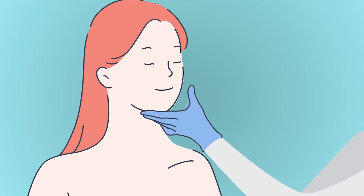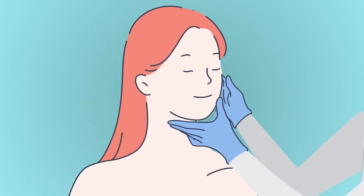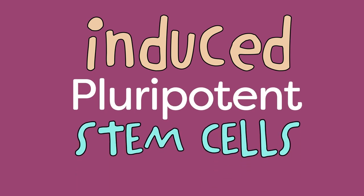Fortunately, another type of stem cells can be generated directly from adult tissues. These are the induced pluripotent stem cells, also called IPS cells, or IPSCs.